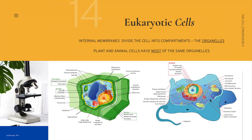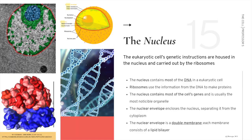For the rest of the lecture, we'll be focusing on eukaryotic cells. All eukaryotic cells have internal membranes that divide the cell into compartments called organelles. Biological membranes are a double layer of phospholipids and other lipids. Plant and animal cells have most of the same organelles with a few exceptions — plant cells have chloroplasts, a large central vacuole, and a cell wall, while animal cells may have a flagellum or a cilium and are surrounded only by a plasma membrane. We'll begin with the most important organelle: the nucleus.